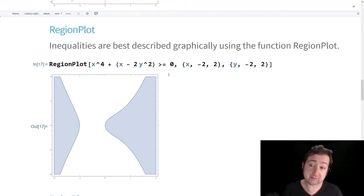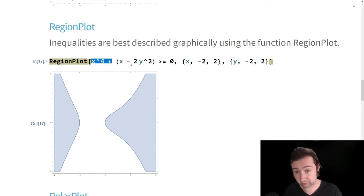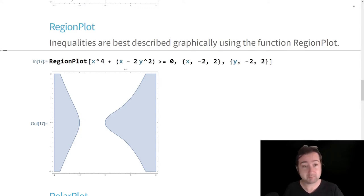If you have a single curve that defines two regions, for example, this inequality, which says x to the fourth plus x minus two y squared is greater than or equal to zero on the window from the square from negative two to two, then region plot is going to trace out the solution set to that.